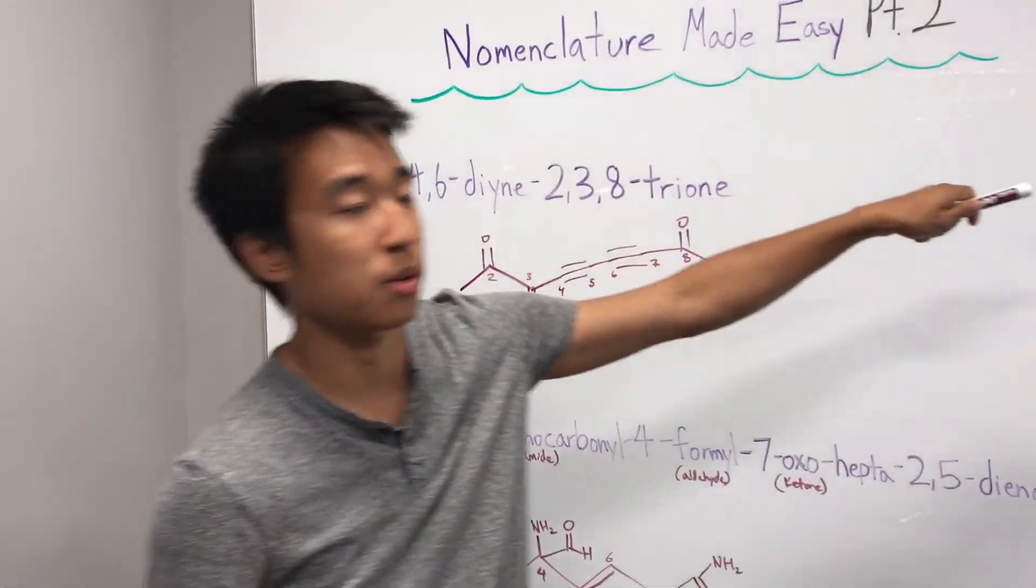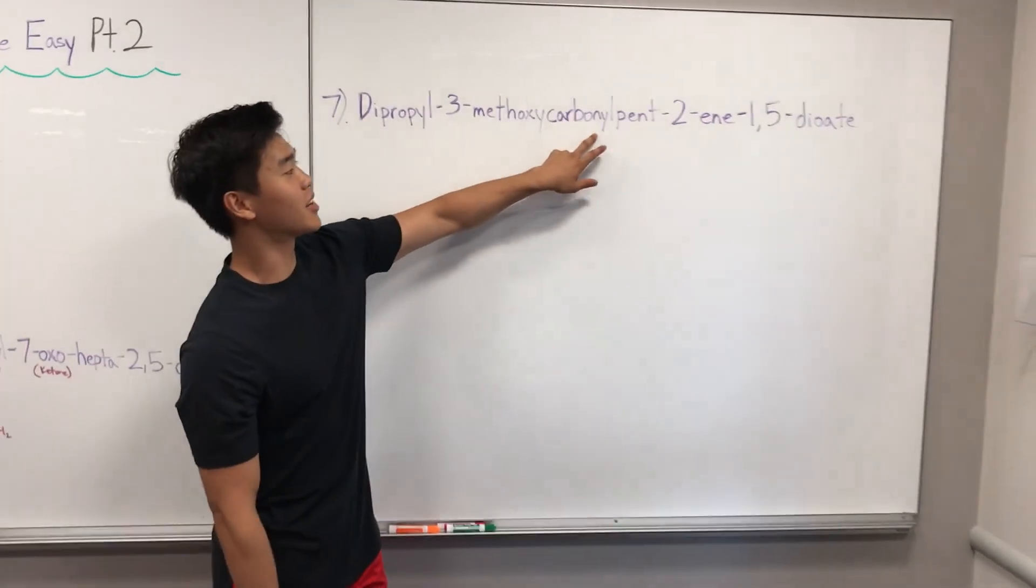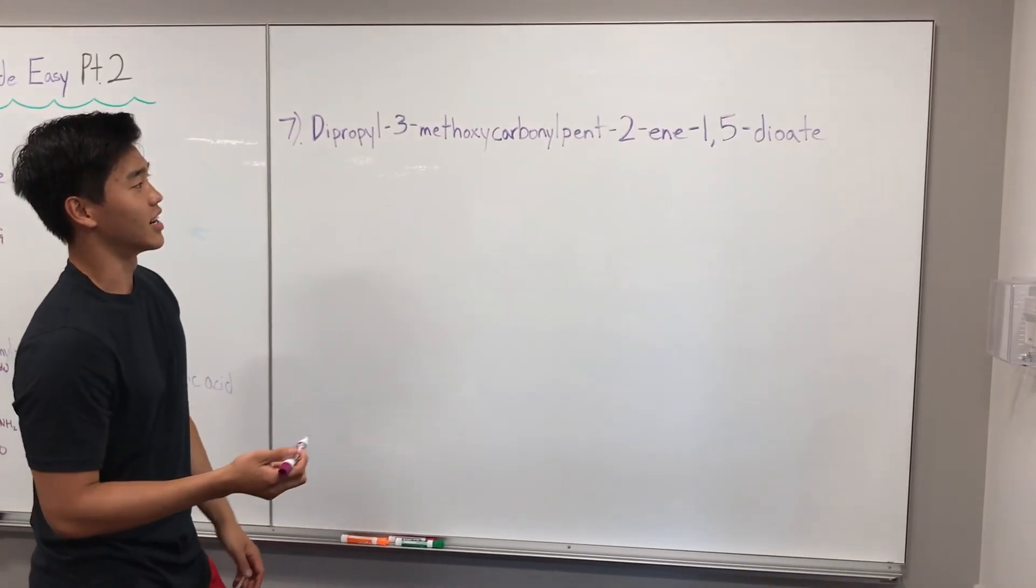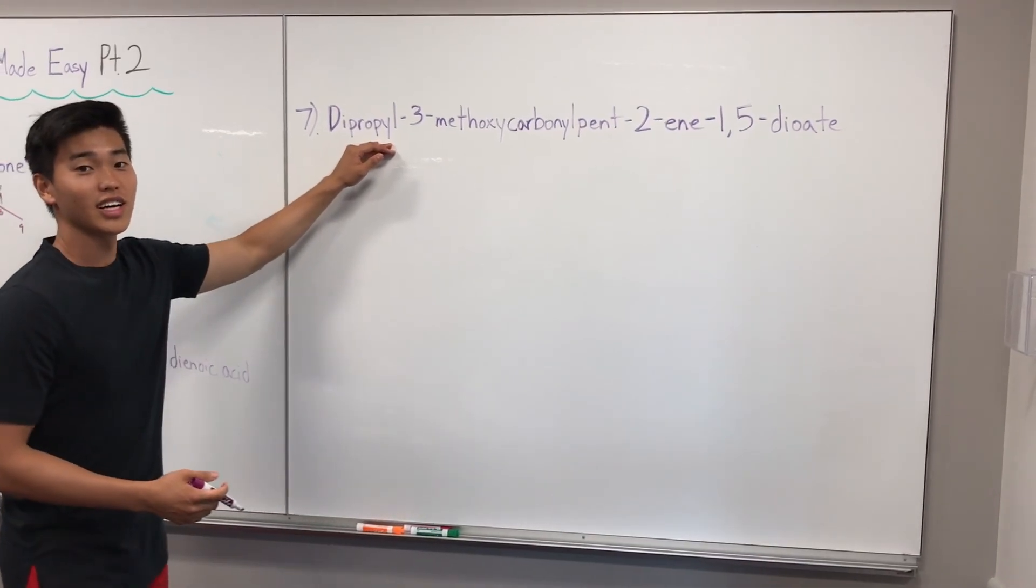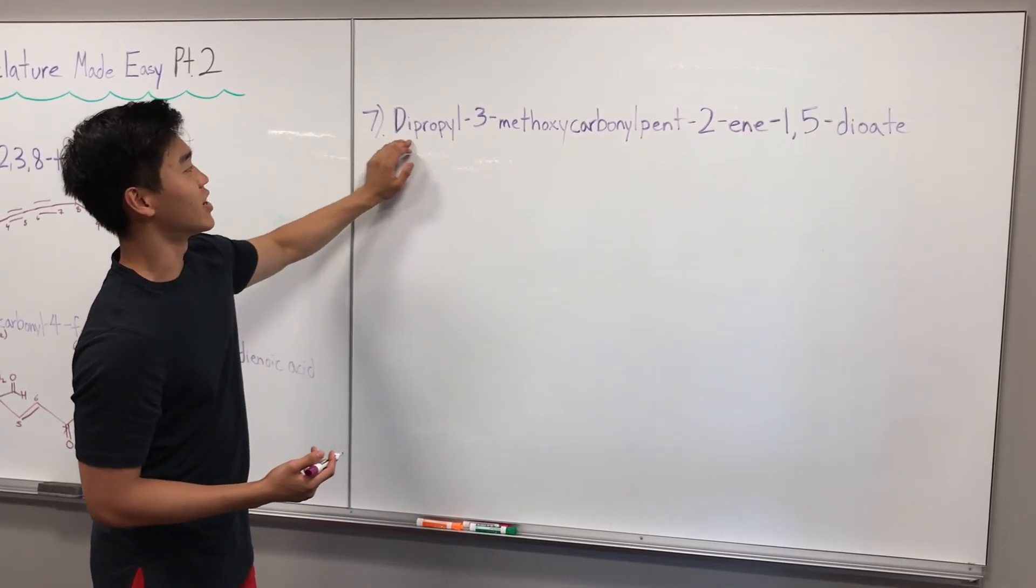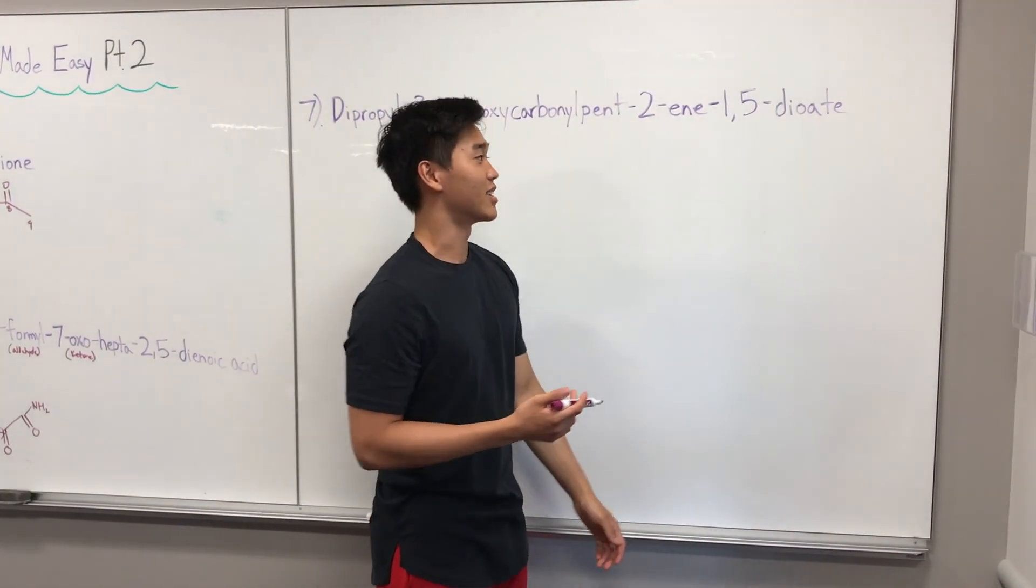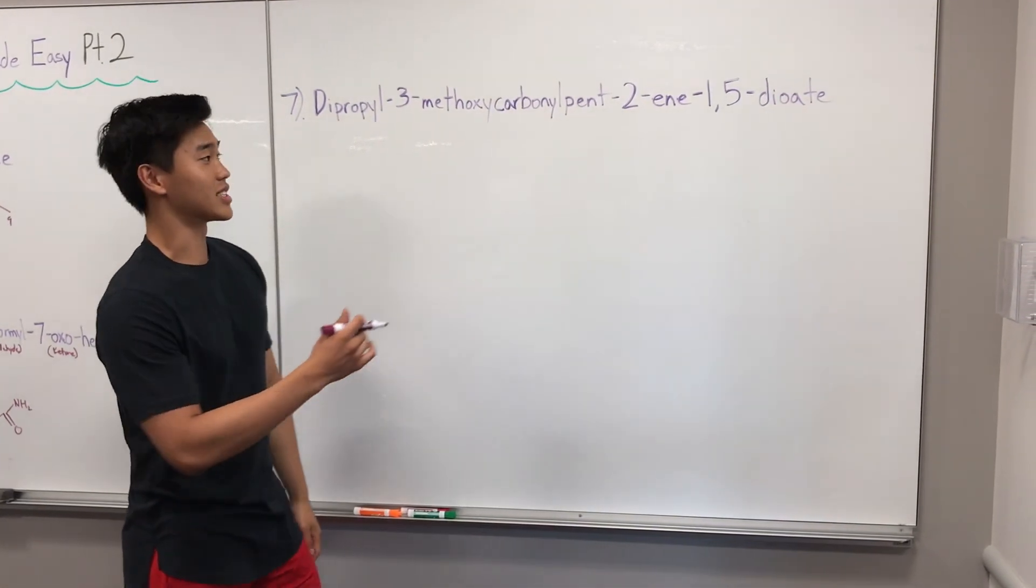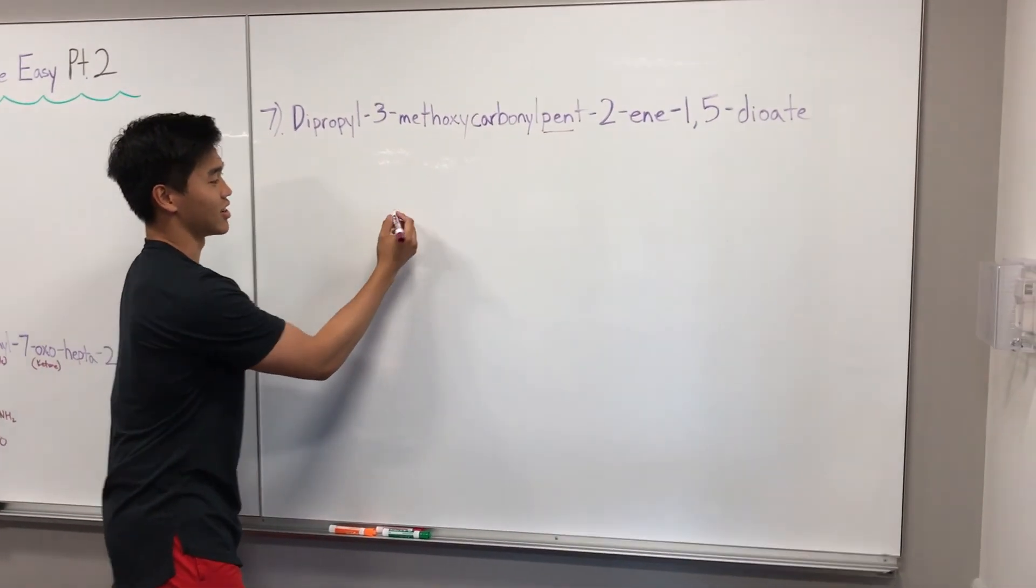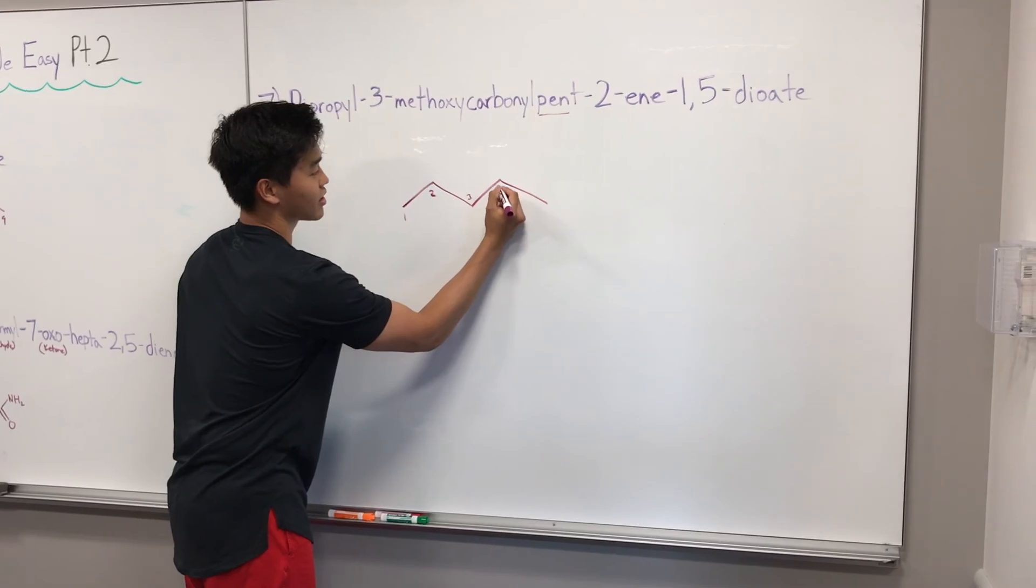Last part, problem seven. Number seven: dipropyl-3-methoxycarbonyl-pent-2-ene-1,5-dioic acid. The first thing you want to note before we get to the parent chain is we have dipropyl here, and this doesn't have a number in front of it. The number usually explains where it is attached to. But if we don't have a number here, we know that this is going to be connected to our parent chain of oic, which is an ester. Let's look for the parent chain. Pent, which is five. So I'm going to draw five carbons. One, two, three, four, five.